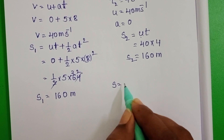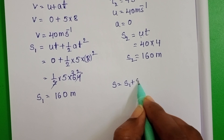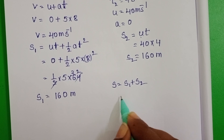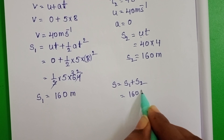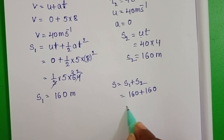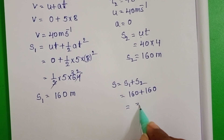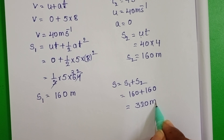Total distance travelled by the car: S = S1 + S2 = 160 + 160 = 320 meters.